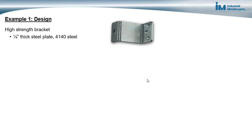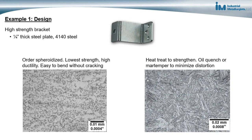Here's an example of how metals engineering is applied to design and manufacturing. The first is for a high-strength bracket — fabricated out of a quarter-inch thick steel plate, maybe 4140 steel. We want to select a material and processes capable of forming the component into the desired shape and getting the desired strength. One option is to order 4140 steel in the spheroidized condition — in this condition the material has the lowest strength and highest ductility, and it's easy to bend without cracking.